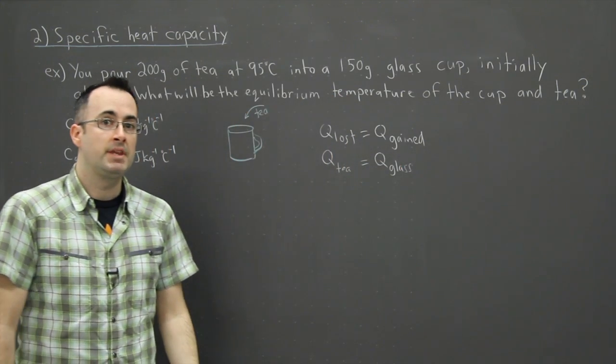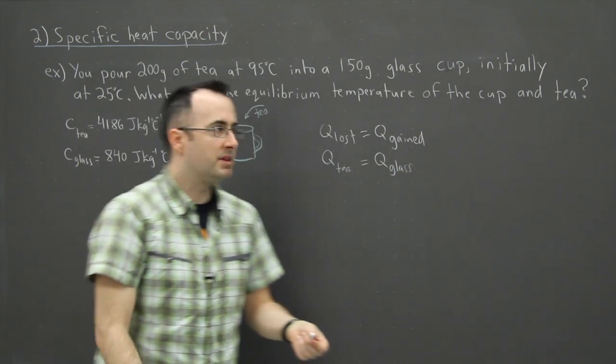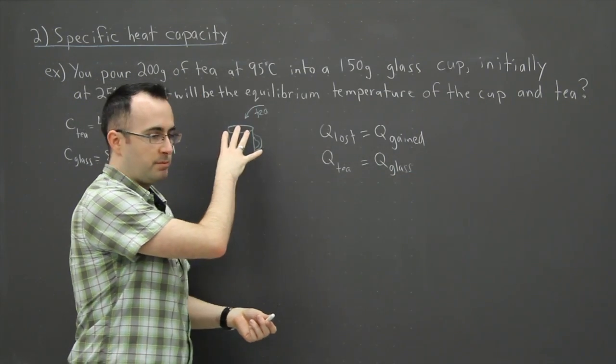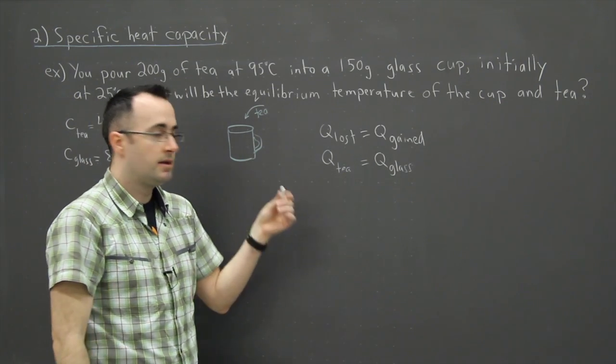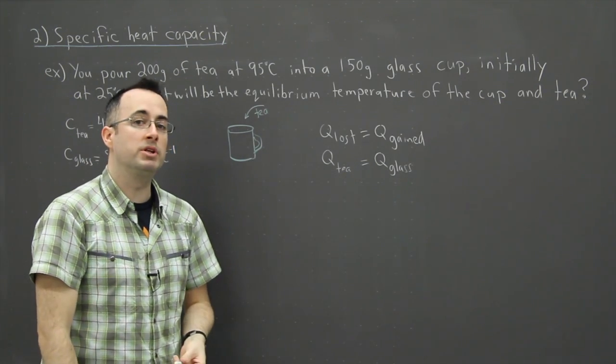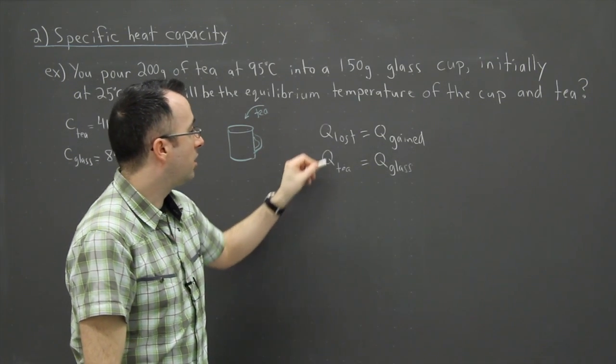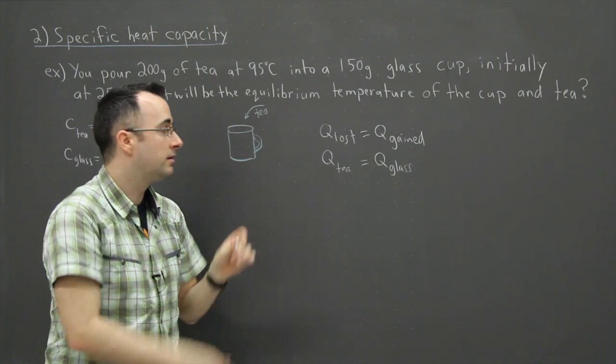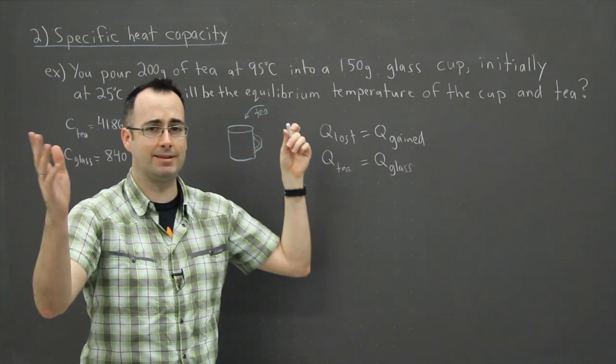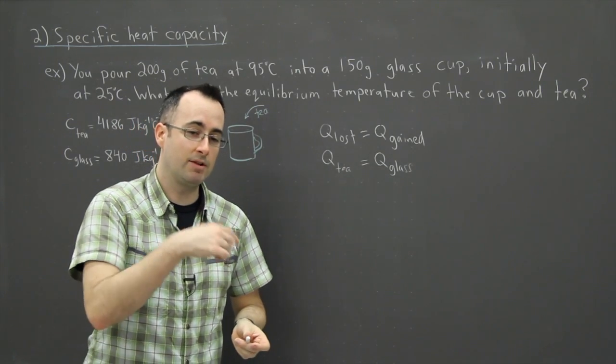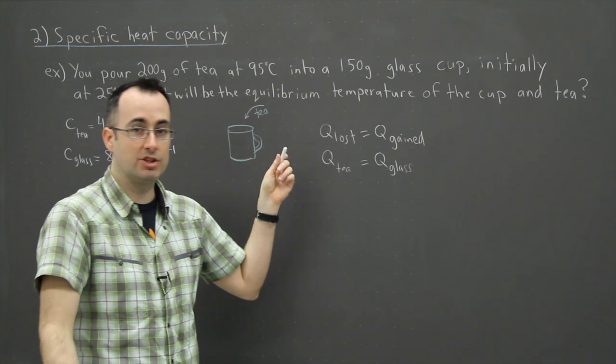The situation could have been more complicated. I could have included two or three different things, but in this case I wanted to keep it fairly straightforward. This is actually something that's quite common and shows up a lot on exams. Normally they'll also throw in a phase change, so they'll say now you're melting ice or something like that. We'll see later that's not very complicated—you just add an extra term for the changing phase, that's the latent heat.